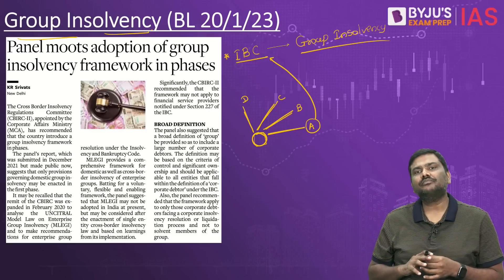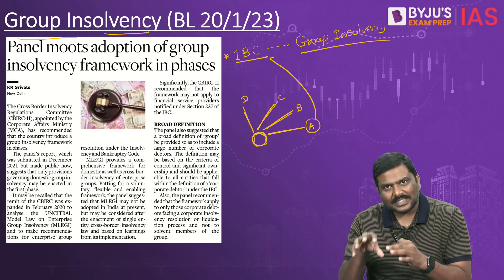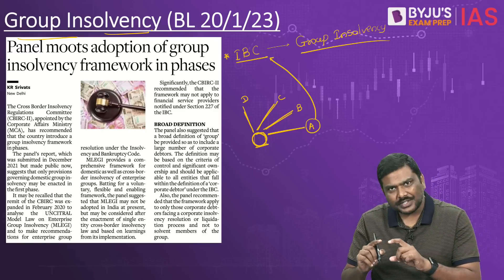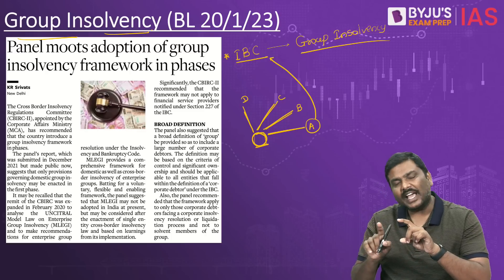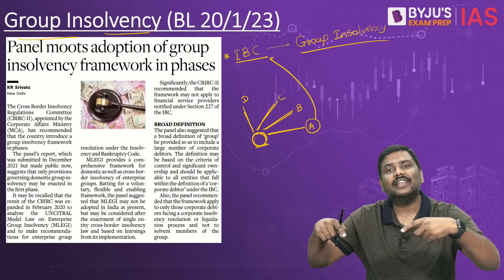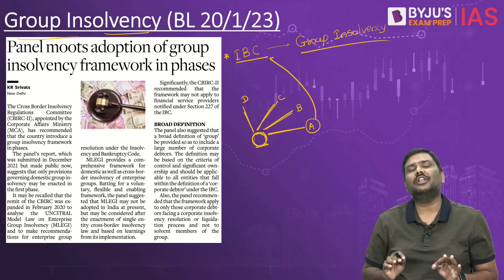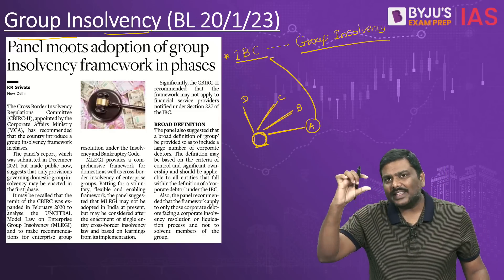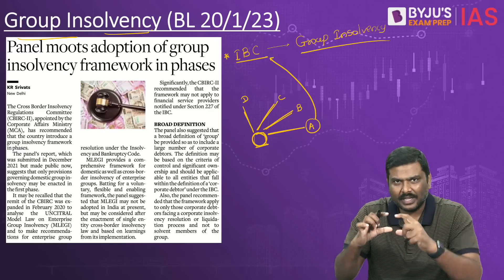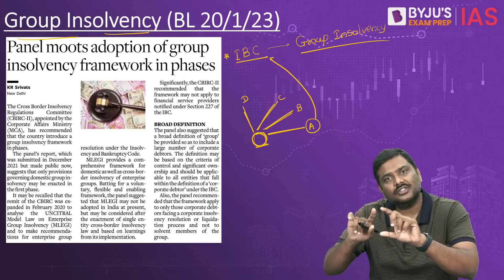The issue with group insolvency is that these subsidiaries are connected to a common owner. Ownership is the same, operations are connected, financial relations exist between all of them, and there is a performance connection. Legally they are different companies, but all of them work as a single organism — their performance, profits, and financials are all interconnected.